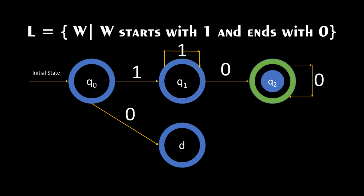Now we add transitions for Q2. If the input is 0, it returns to Q2 itself since W ends with 0. If the input is 1, we return to Q1, since there can be any number of characters — either 0 or 1 — between the start and end of the string.